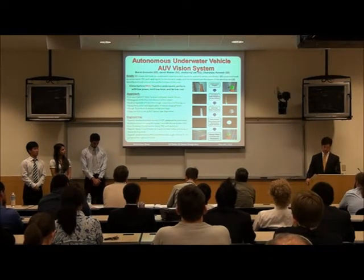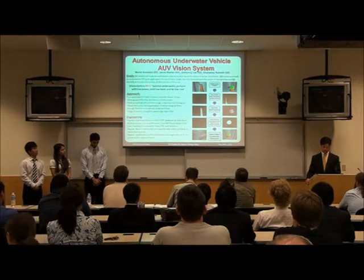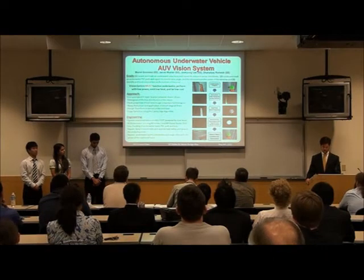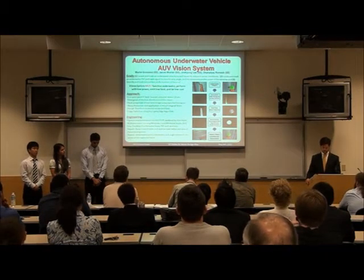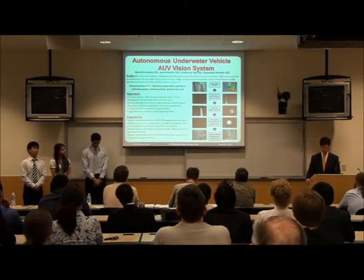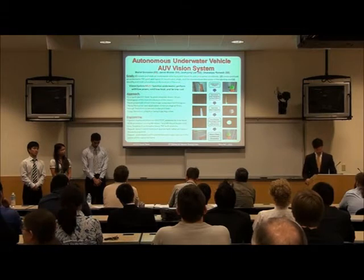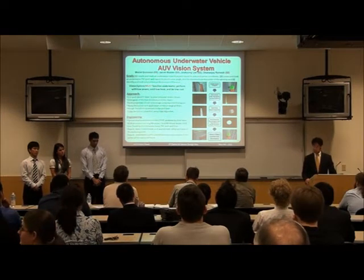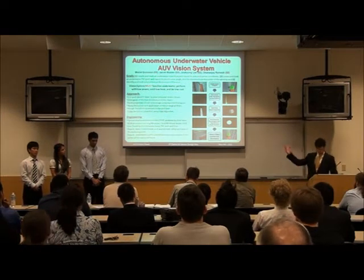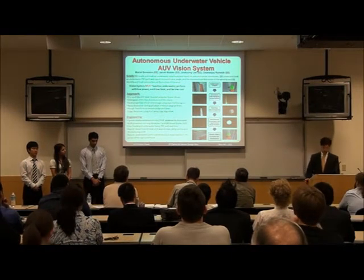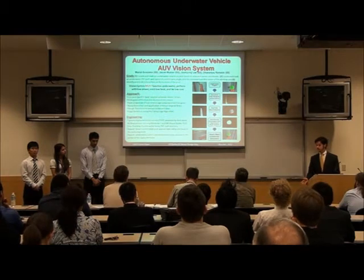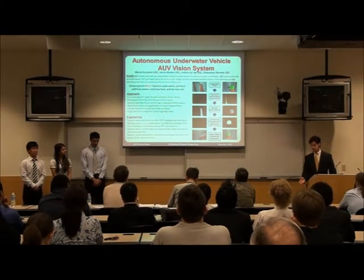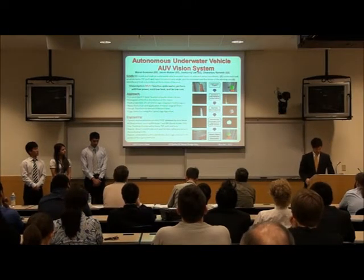Next, the hue histogram is calculated in order to emphasize the desired color. The projection based on the hue histogram is created and thresholded into a binary black-and-white image, which you can see up there — white being positive values indicating detection, and black being negative values indicating background.